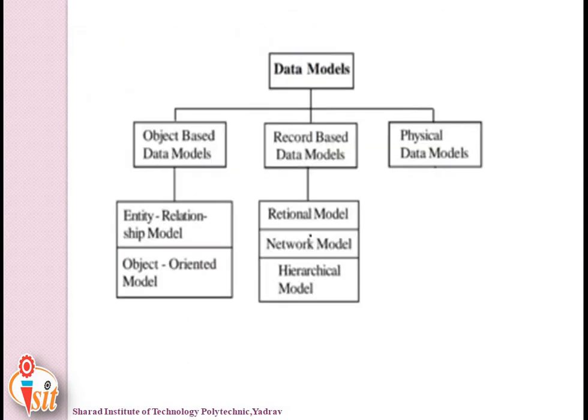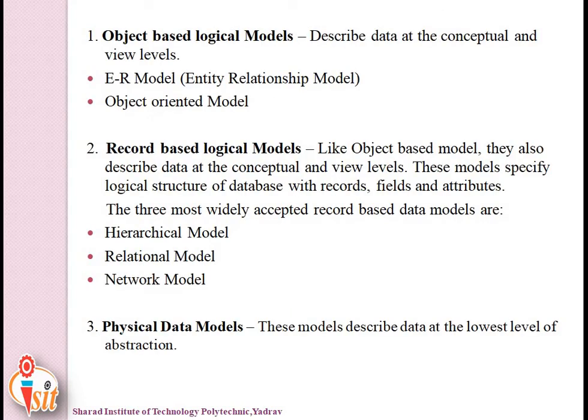The data model classification is as shown in figure. Object-based data model has two subtypes: entity relationship model and object-oriented model. Record-based data model contains relational model, network model, and hierarchical model. Object-based logical models describe data at the conceptual and view level. Record-based models specify the logical structure of the database with records, fields, and attributes.